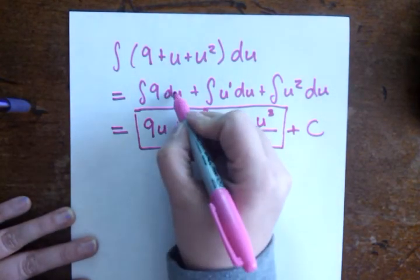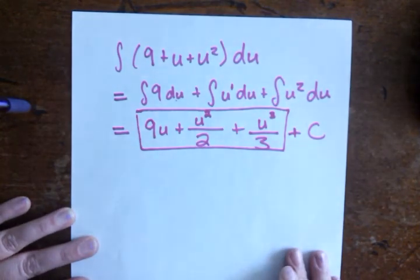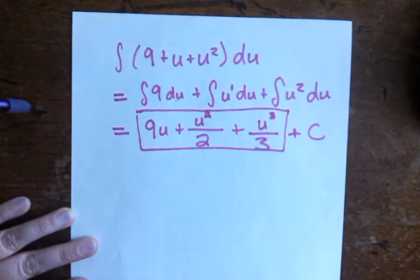The reason you're using the u is because they're asking for this whole thing to be done in terms of u. And that is question number 4.